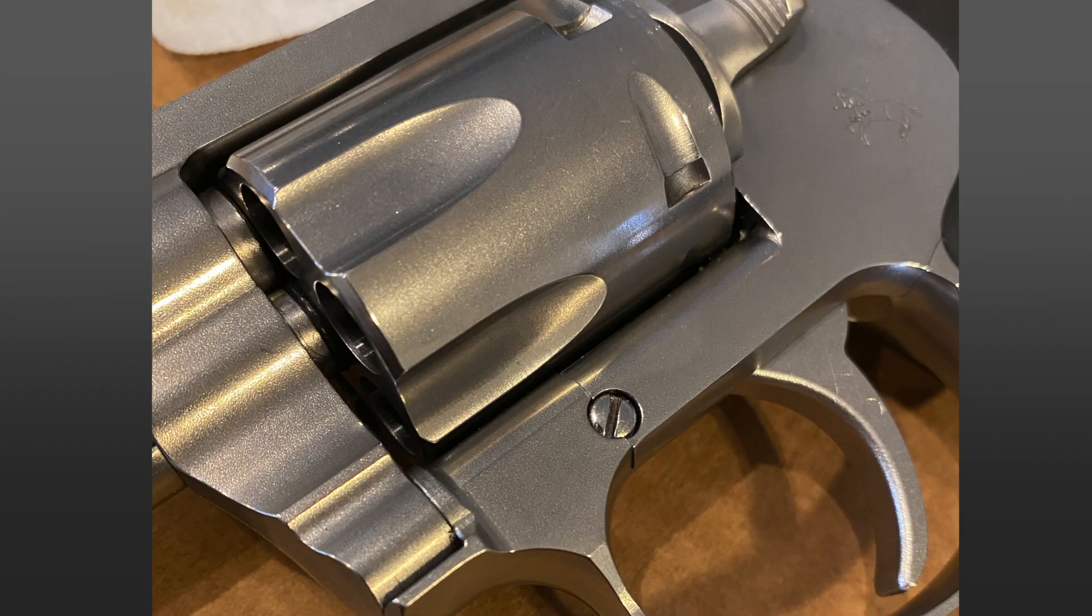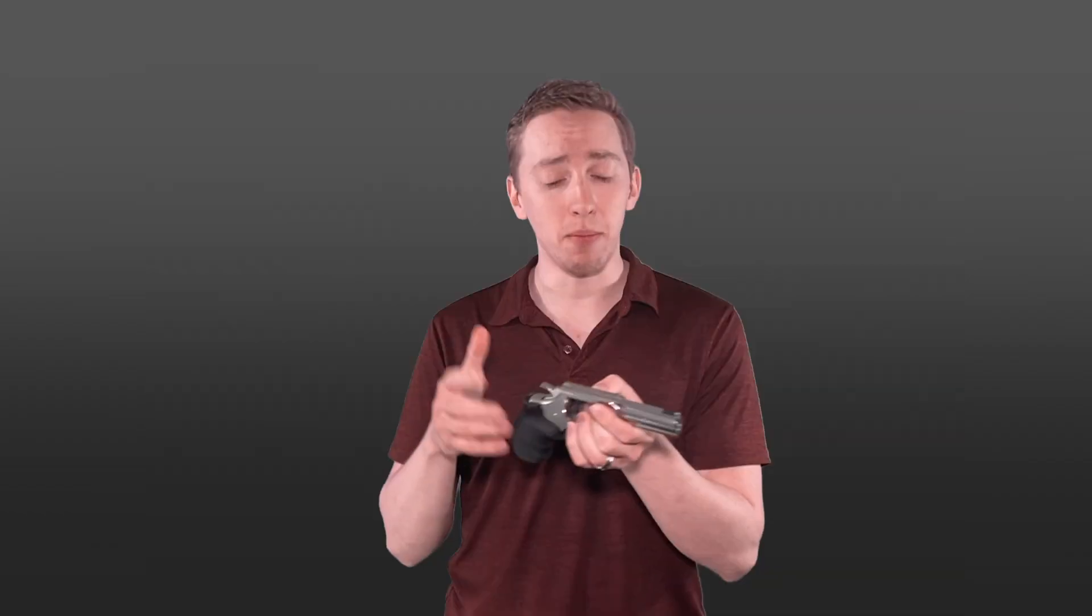So first of all, the seam where the side plate is on the frame where the screw is, when I bought it, it was misaligned, like the machining was really sloppy and it didn't line up the way that it should. I really wish I would have noticed it in the gun store because I probably wouldn't have gotten it, but I didn't notice it and I got it.